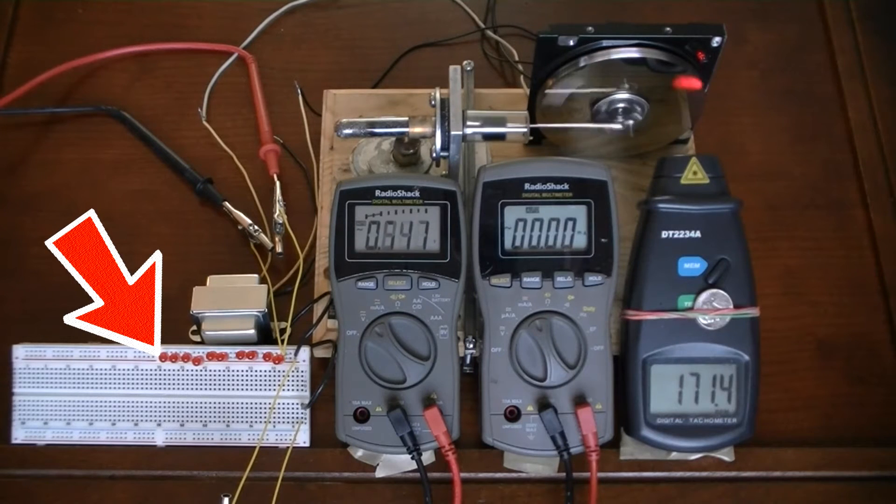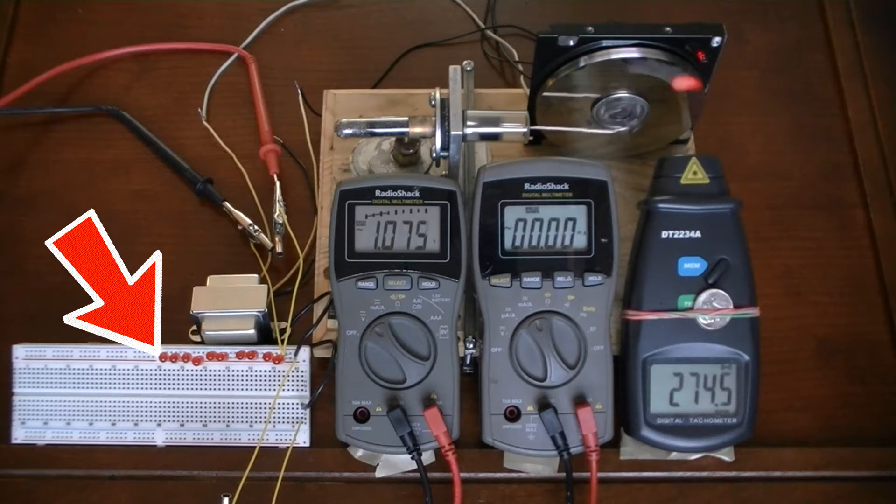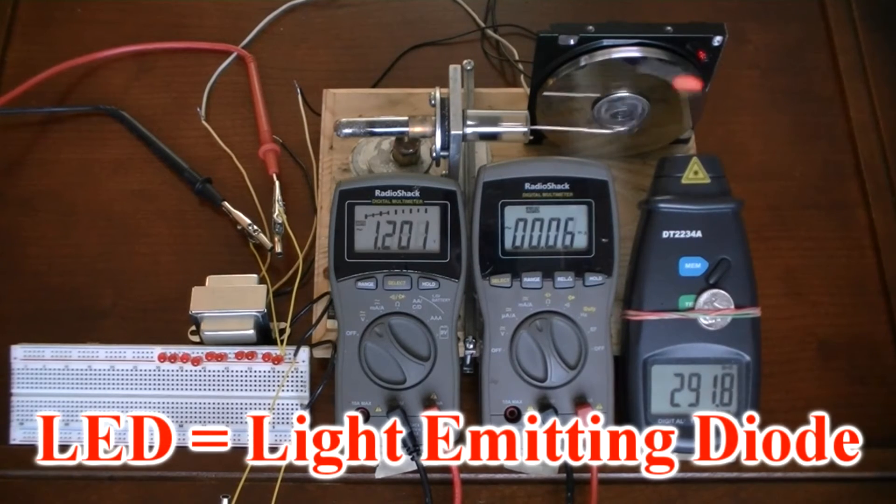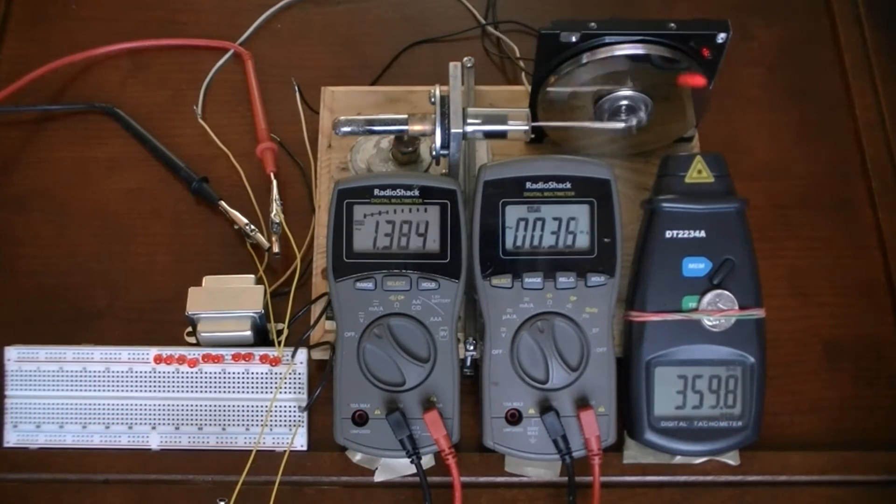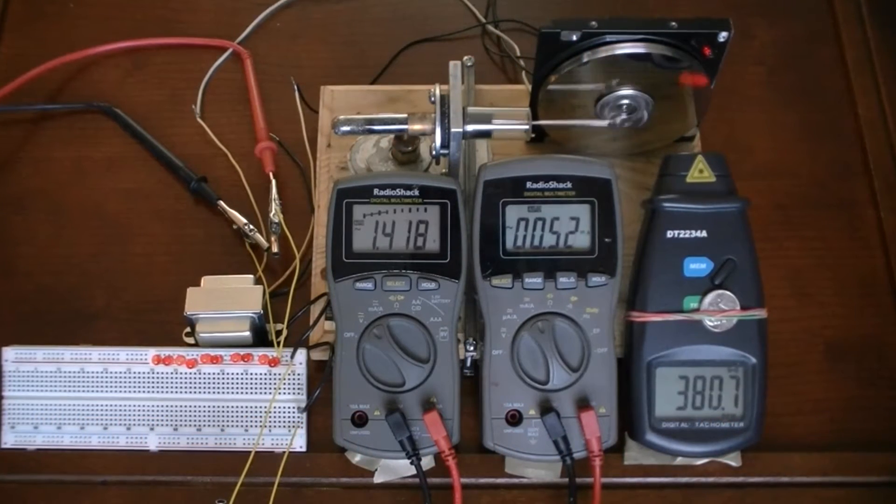These red LEDs allow electricity to flow through them once the voltage reaches about 1.1 volts. LED stands for light emitting diode. A diode is a one-way valve for electricity, so these LEDs will only allow electrons to pass in one direction.